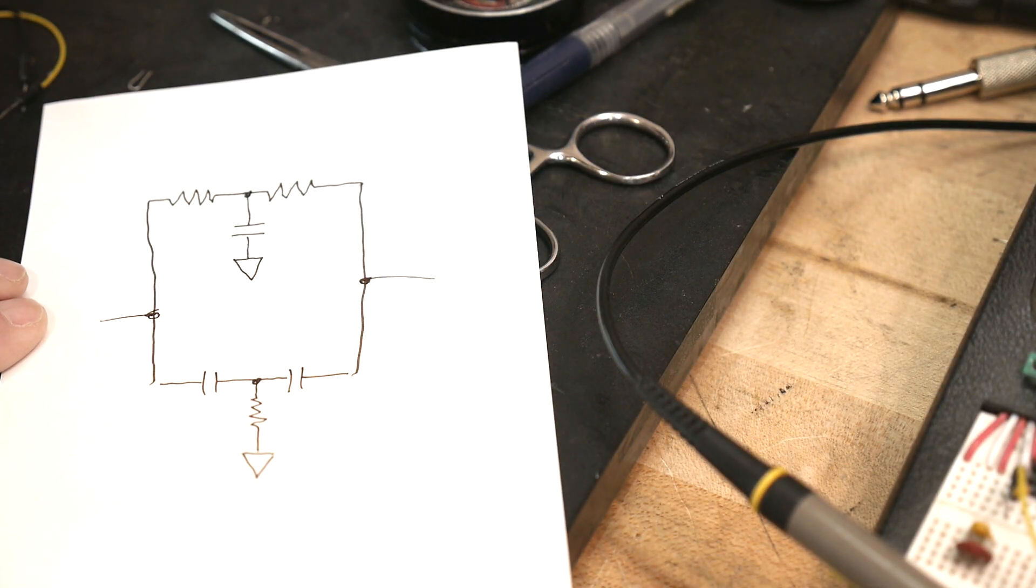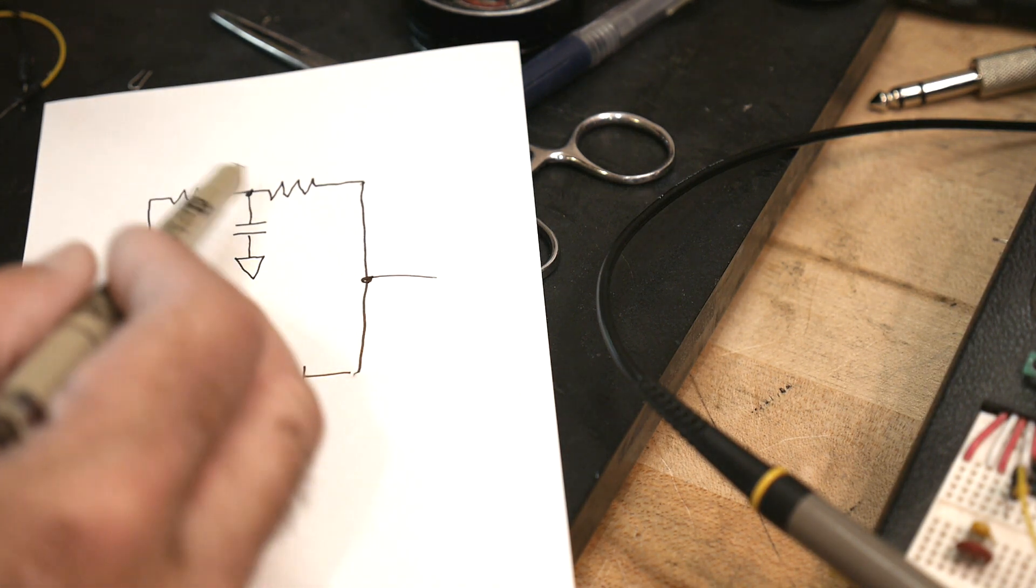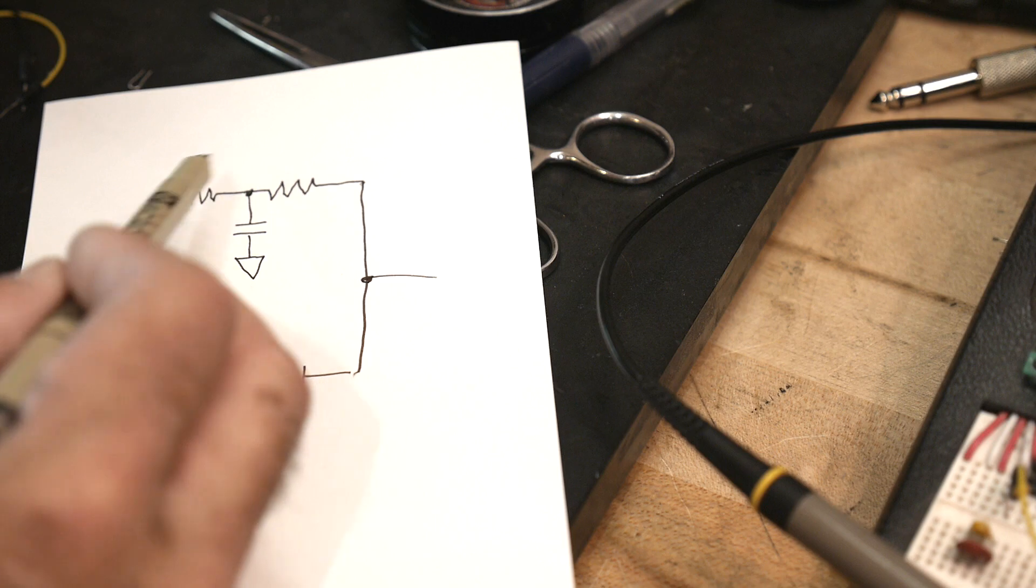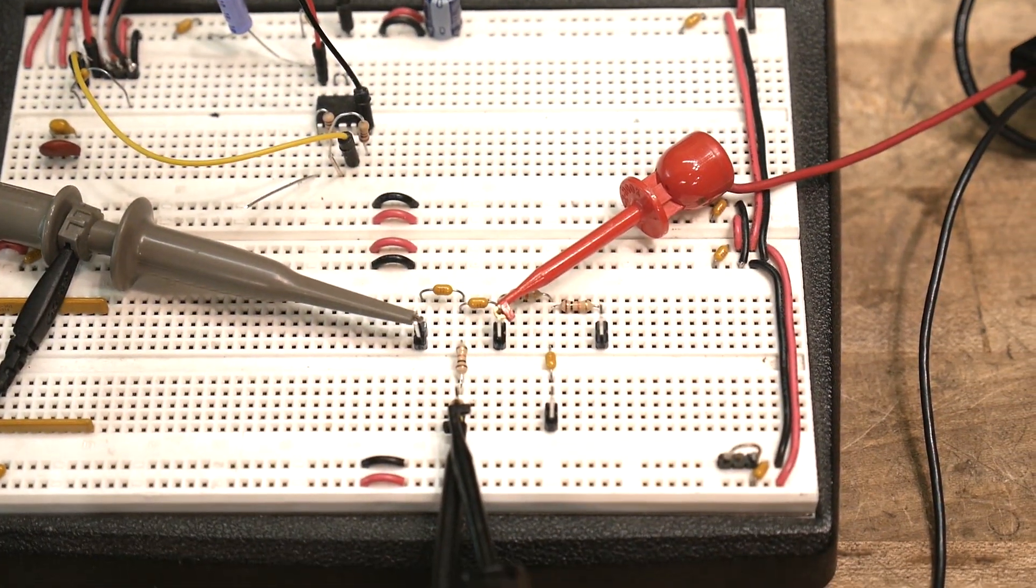So this is called a twin T filter. There's two Ts, so it's a twin. So we're going to have a high-pass filter and a low-pass filter in the same circuit. So let's see what that looks like.